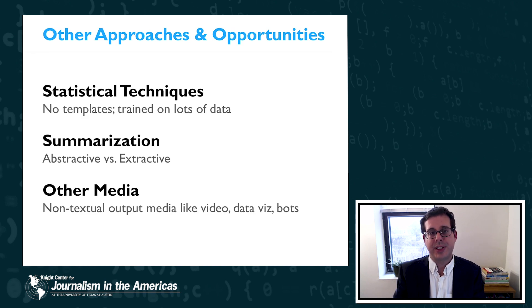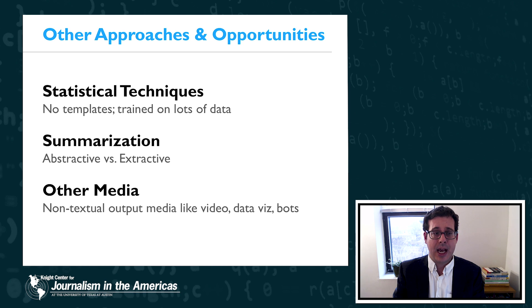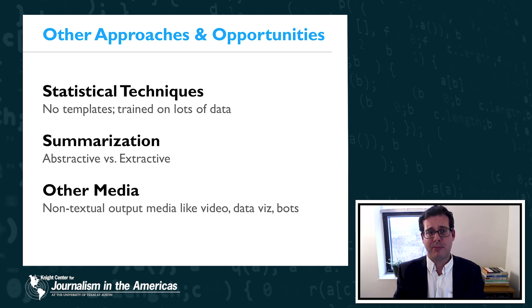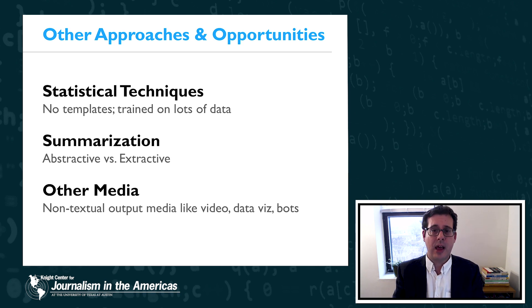There are also other approaches and interesting opportunities for automated content production. Beyond the standard NLG approach, there are statistical techniques that can be used to generate text. These techniques don't use templates; instead, they're trained on lots of data. Machine learning techniques can learn models from examples of articles and then generate new texts based on those learned models. However, statistical techniques are typically not as good as template-based techniques in terms of quality, and so we don't see many of these statistical techniques being used in industry right now.